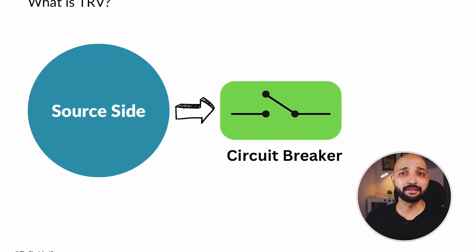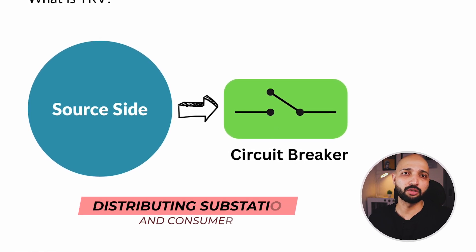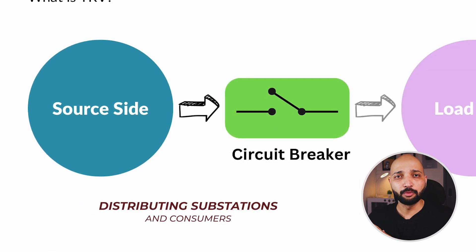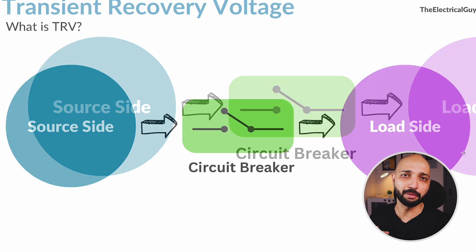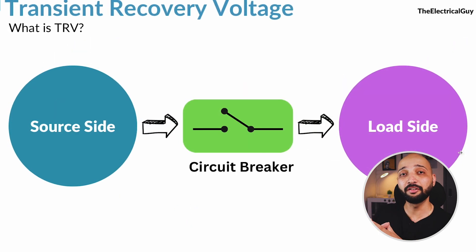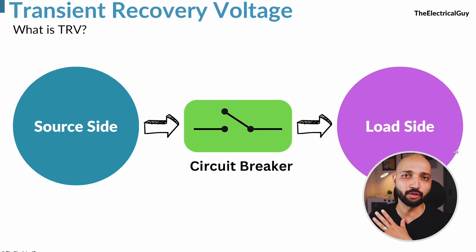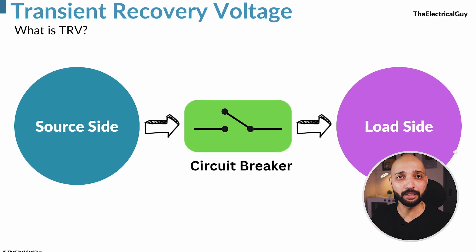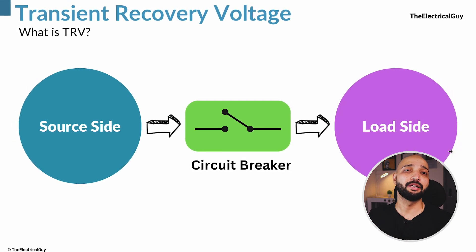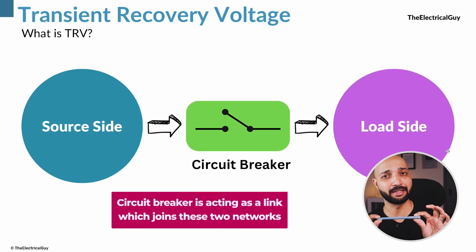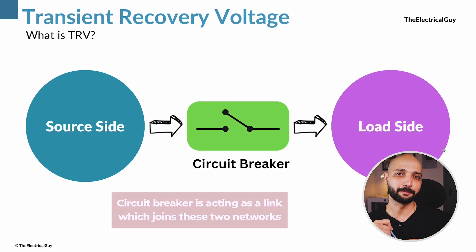On the right hand side of the breaker, there are distribution substations, distribution lines, and consumers to whom we are delivering the power. This is identified as the load side network who is consuming the power. The circuit breaker is basically acting as a link that joins these two networks.